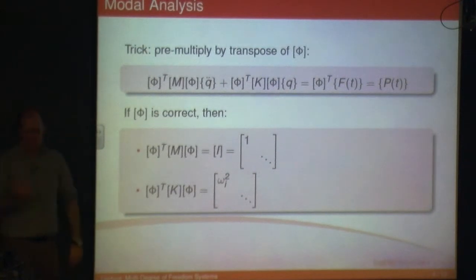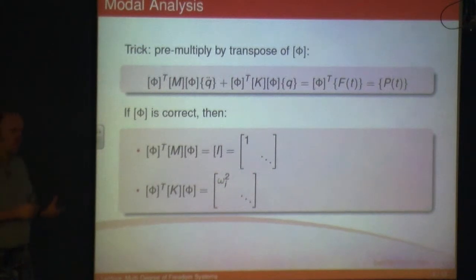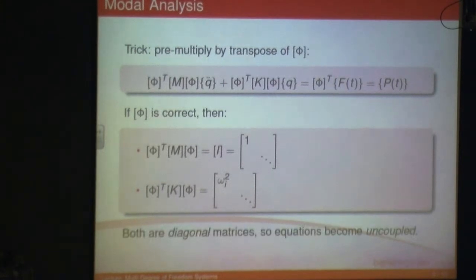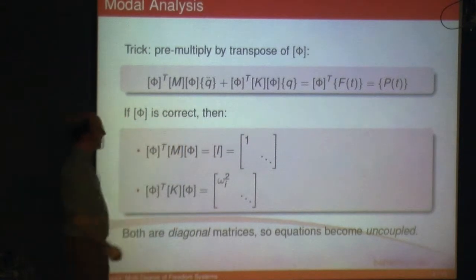So instead of having n coupled equations for an n degree-of-freedom system, with modal analysis we've manipulated the equation by making a substitution and ended up with n uncoupled equations. Uncoupled equations means we can solve them individually — you can solve them quickly and you can do it by hand. Both the mass and stiffness terms become diagonal matrices, and that's what allows you to have uncoupled equations.